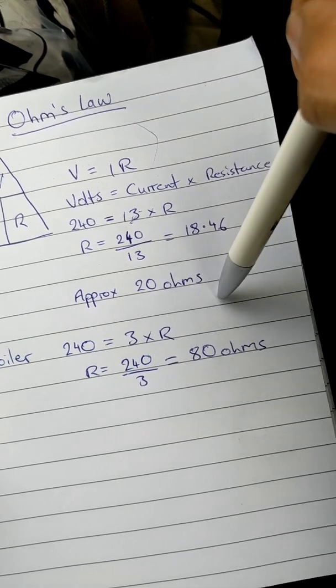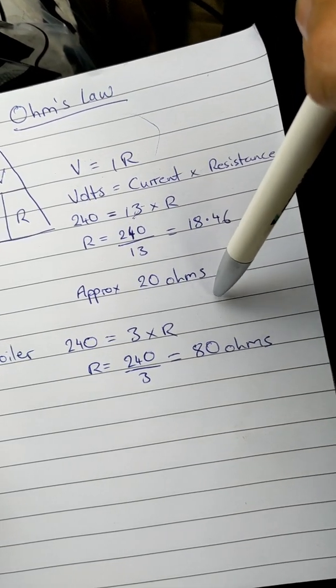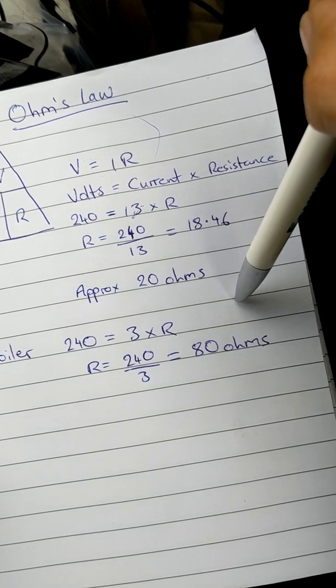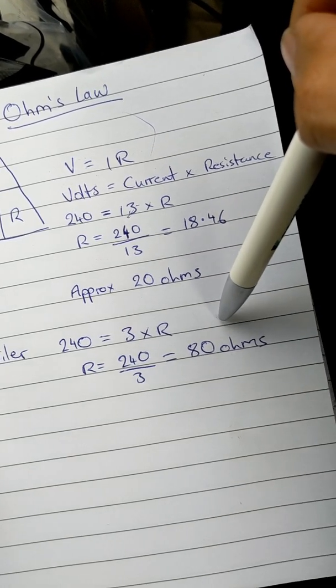So again, it's a dead test, power off to the boiler, checking for terminals across live and neutral, and you're looking for 80 ohms or thereabouts.